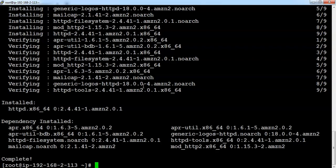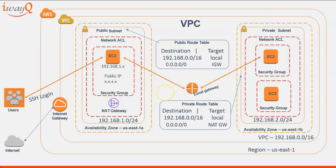Login to the private instance from the public instance and run 'yum install httpd -y'. The private instance is now able to connect to the internet and download the required packages via the NAT gateway — the packages are installed successfully. This means the instance can access the internet, but users cannot access the private instance from outside the VPC network. This demonstrates how to deploy a VPC architecture in AWS and configure a bastion host to access private instances in private subnets. That's it for this lecture — see you in the next one. Thank you.